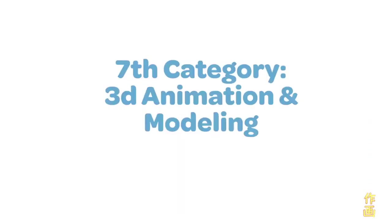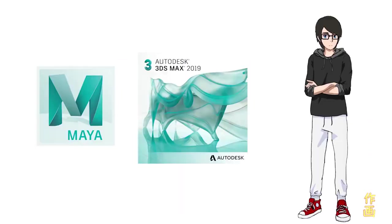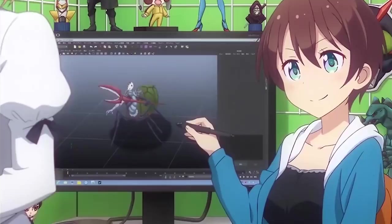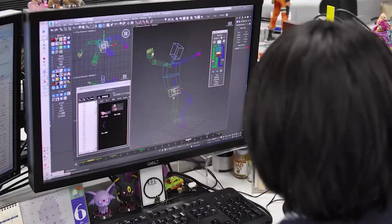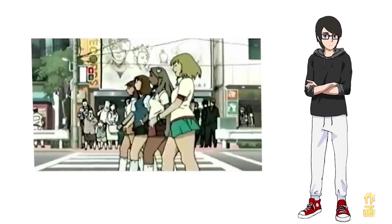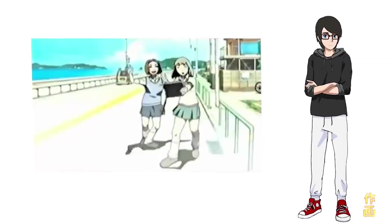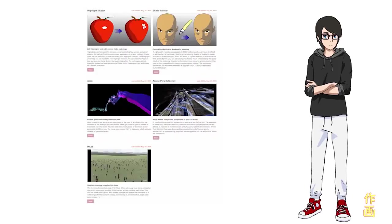For 3D animation and modeling, Maya and 3ds Max are the most prominent programs used, with anime increasingly including 3D models in productions, most prominently for vehicles, backgrounds, and large objects. 2.5D work is very common and is done in these programs as well — that's when 2D and 3D backgrounds are blended into the same image as an optical illusion. OLM has a lot of free plugins for Maya useful in the anime pipeline, like crowd simulations, toon shaders, and camera deformers.